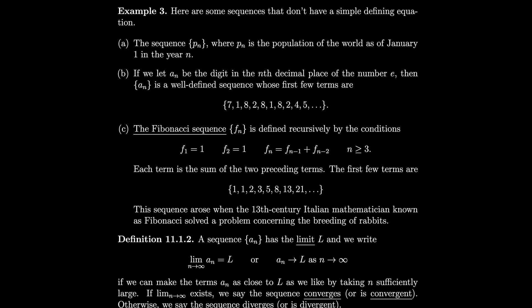Here are some sequences that don't have a simple defining equation. The sequence pn, where pn is the population of the world as of January 1st in year n. And if we let an be the digit in the nth decimal place of the number e, then an is a well-defined sequence — since e = 2.718…, we just take those digits and put them into a sequence.